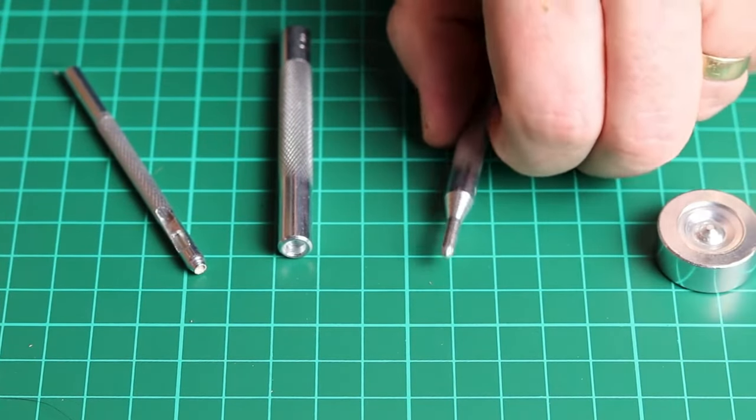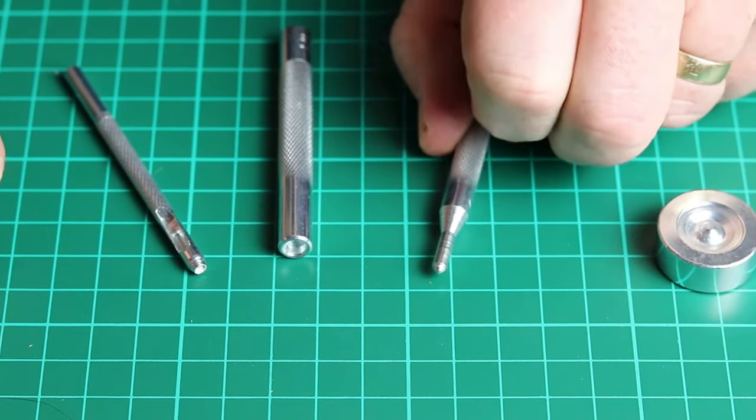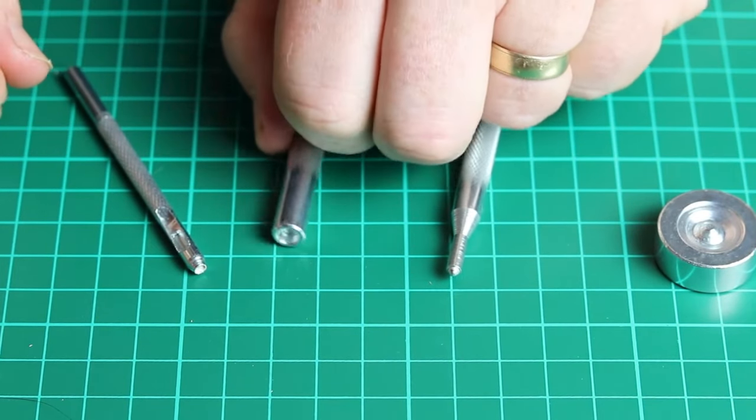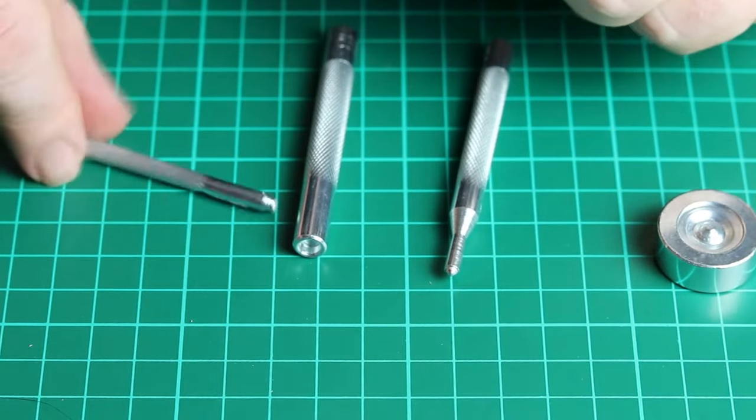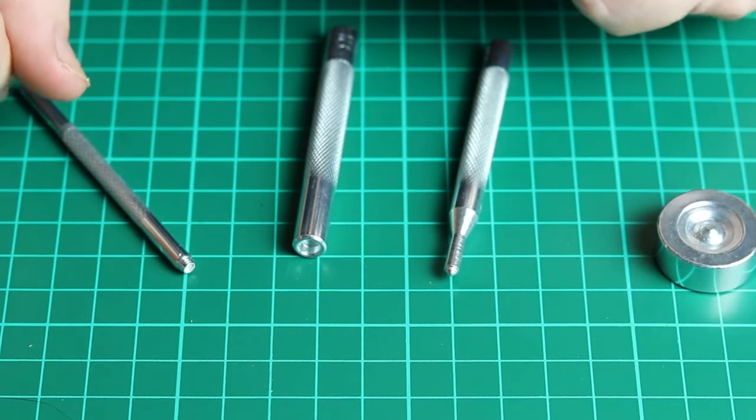Then we have a pin tool which has got a little dome bit coming outwards at the top, and we have a concave tool which has a little dome going inwards. Next, we have a hole punching tool to punch holes in whatever material you're going to use.